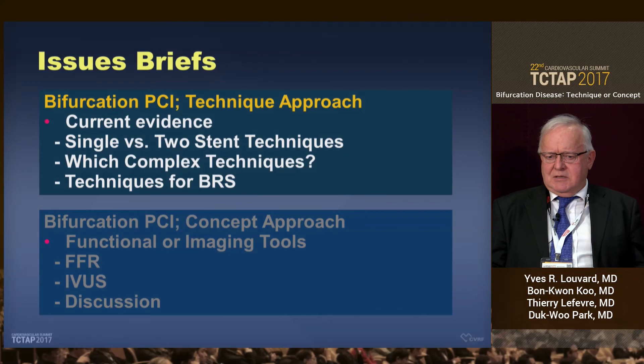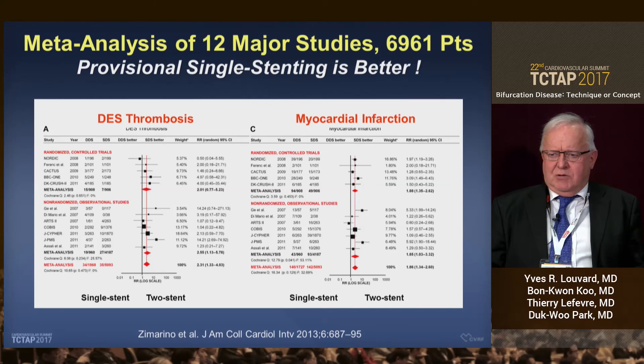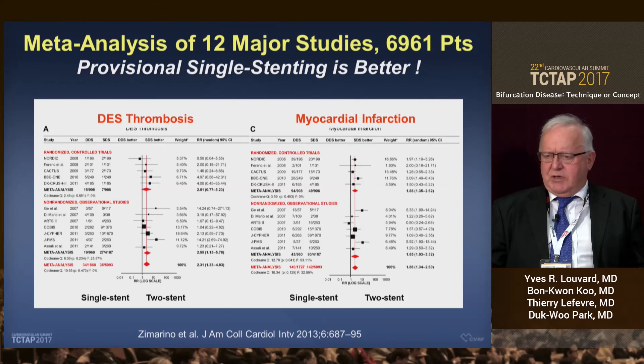I will present you first some selected slides. This is a meta-analysis done by Marcosi Marino on randomized and non-randomized trials, showing that there are more DES thrombosis when you are doing a two-stent technique. And this is translated into myocardial infarction — both are related, meaning myocardial infarctions are mainly related to DES thrombosis, not to periprocedural MI.